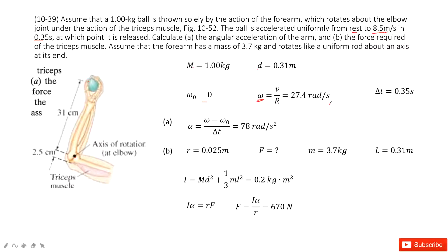First, we can calculate the angular acceleration — very easy. You know the final angular velocity and the initial angular velocity, so divide the difference by time t and you get it.